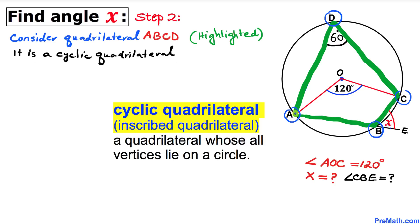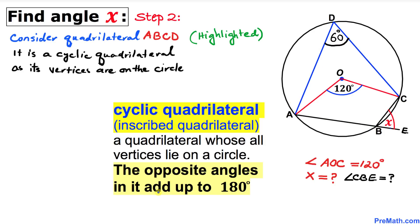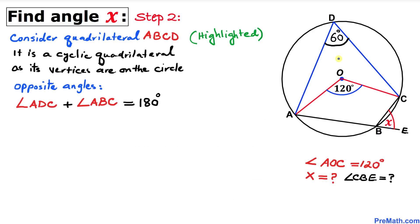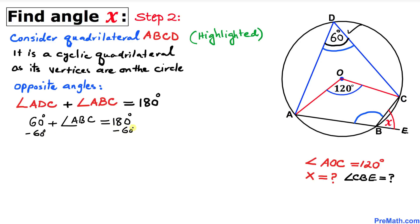Moreover, opposite angles in a cyclic quadrilateral add up to 180 degrees. Therefore angle ADC and angle ABC add up to 180 degrees. Since angle ADC is 60 degrees, we write 60 degrees plus angle ABC equals 180 degrees, and subtracting 60 from both sides gives us angle ABC.